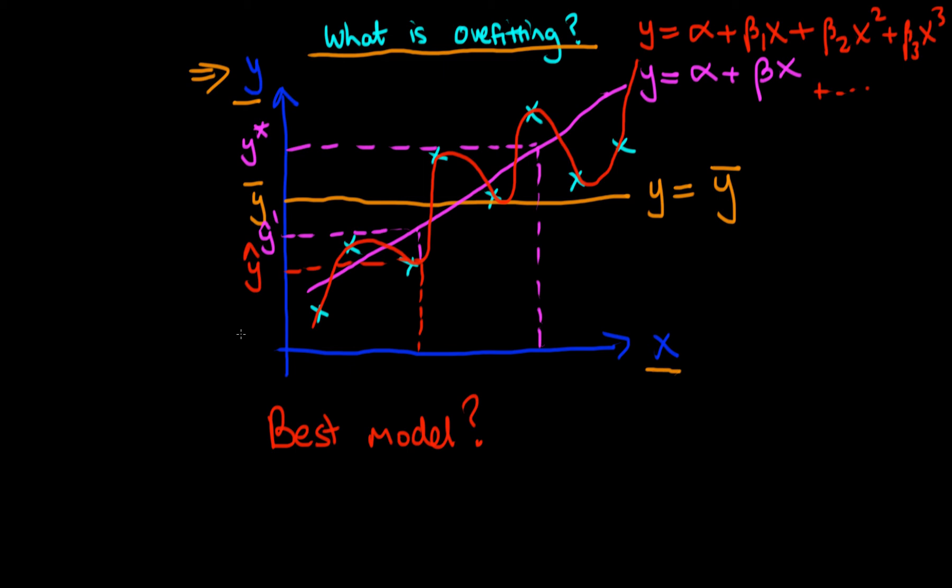The idea with the red model is that essentially it fits the noise in our data, not the signal, which means that it generalizes very poorly to other datasets.